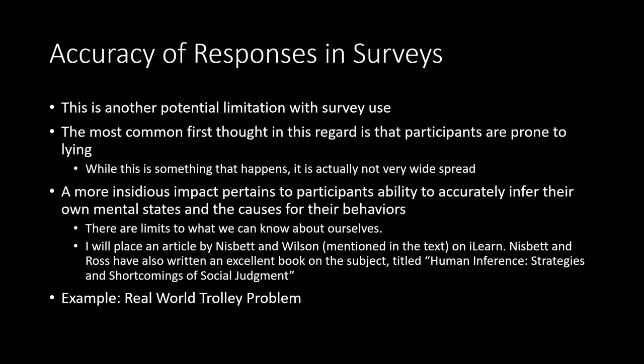When it comes to the accuracy of responses in surveys, this is another potential limitation. The most common thought is that people are prone to lying — and this does happen, but it's actually not that widespread; many people are prone to honest responses in surveys. The much more insidious impact pertains to participants' ability to accurately infer their own mental states and the causes of their behaviors. Many of us have explanations for why we do things, but those reasons need not actually be the original causes of our behavior. There is a relatively large body of literature showing that we're not very good at identifying the true causes of our behavior.